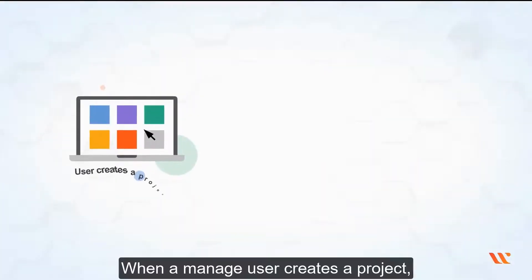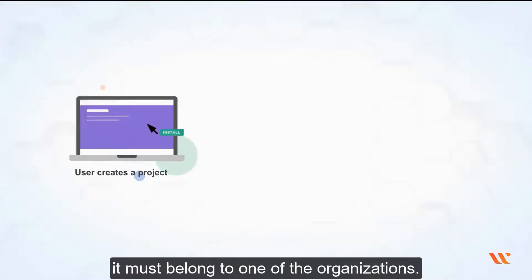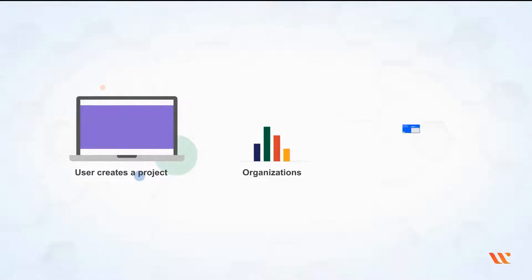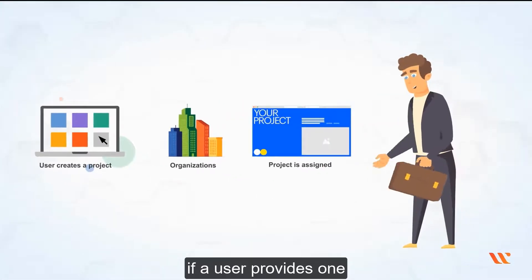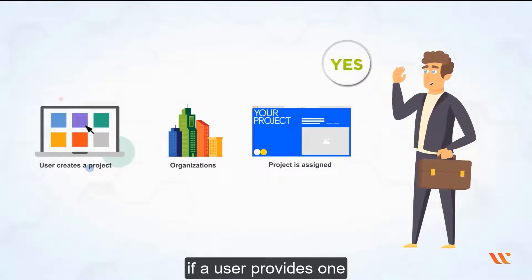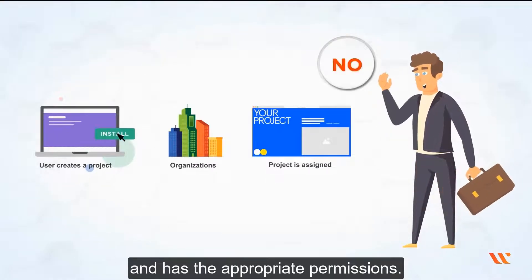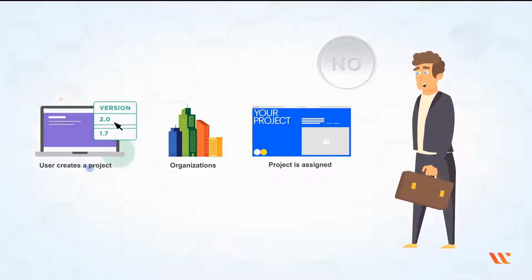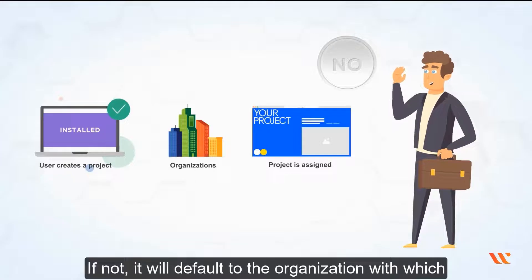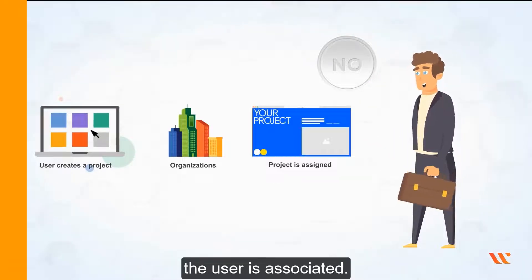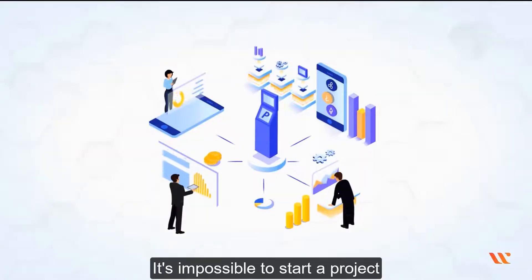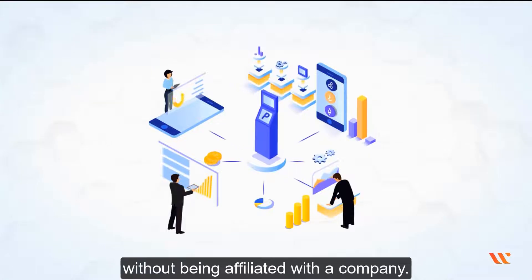When a managed user creates a project, it must belong to one of the organizations. The project is assigned to an organization if a user provides one and has the appropriate permissions. If not, it will default to the organization with which the user is associated. It's impossible to start a project without being affiliated with a company.